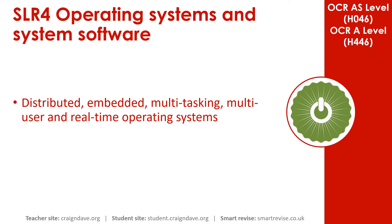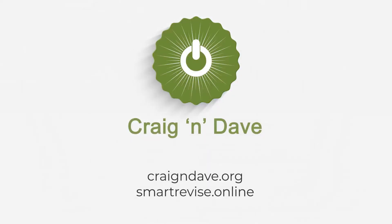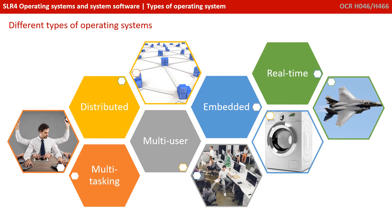In this video we're going to discuss a number of different types of operating system, including distributed, embedded, multitasking, multi-user and real-time. Now that you understand what an operating system is, its purpose and its roles, it's important to understand there are different flavours or types of operating system. The five you're required to know about are shown on the screen now. Let's take a look at them in a bit more detail.